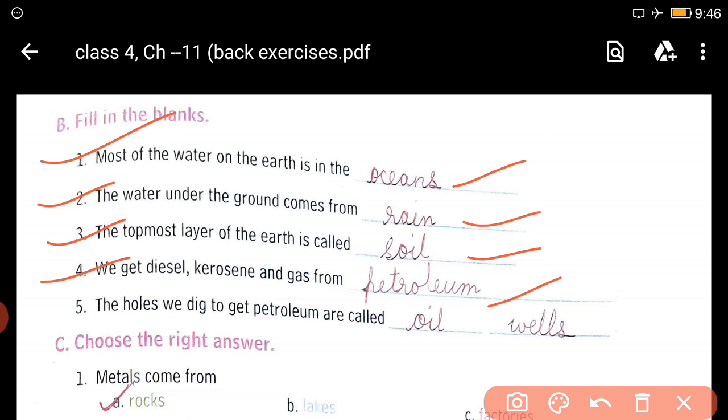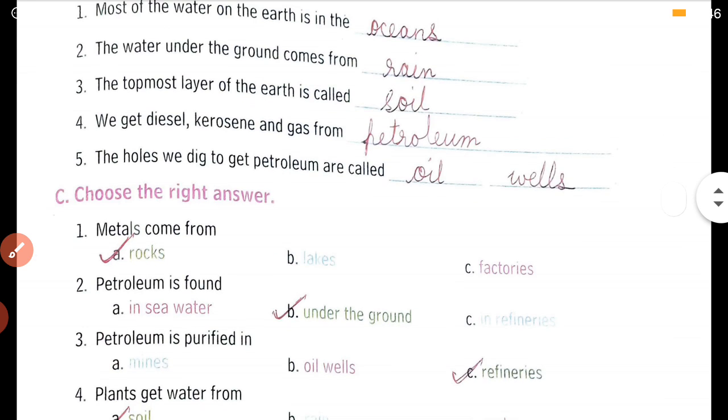Fifth, the holes we dig to get petroleum are called oil wells. Petroleum is extracted through holes dug, known as oil wells. Now second is choose the correct option.